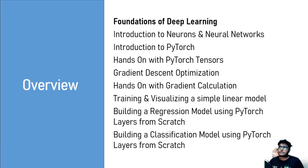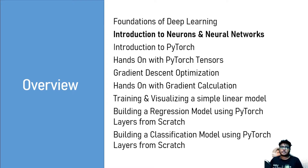These are the things we are going to cover in this foundations course. We are going to start with the foundations of deep learning — what is deep learning, what are neural networks. We are going to cover the single building blocks of a neural network, which are the neurons, the mathematical functions behind them, and how different neurons come together to build complex networks called neural networks.